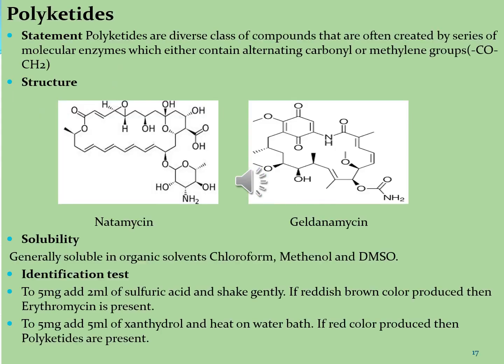Let's see what are polyketides. Polyketides are a large group of metabolites found in bacteria, fungi and plants, synthesized from acyl coenzyme precursors. They are a diverse class of compounds often created by a series of modular enzymes containing alternating carbonyl or methyl groups in the form of C=O and CH2. Key phytoconstituents include natamycin and geldanamycin.